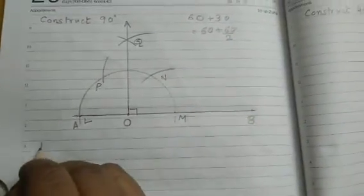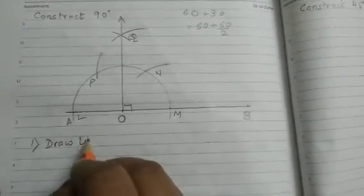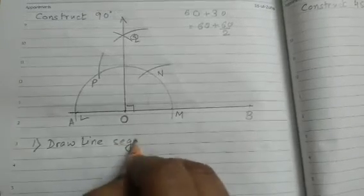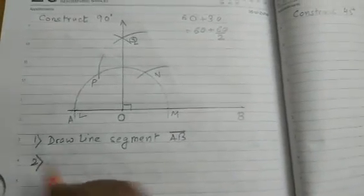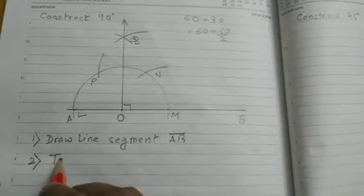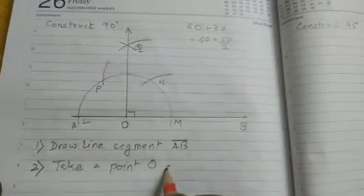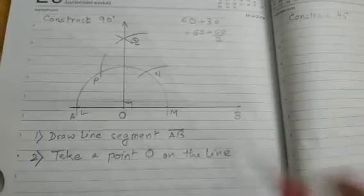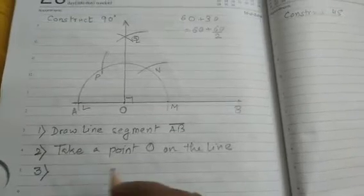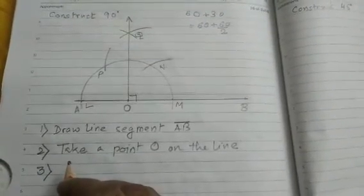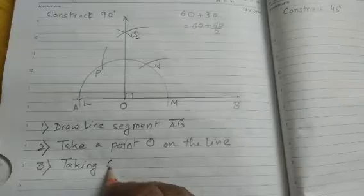First one, draw line segment AB. Two, because I have taken a point O, I am writing: take a point O on the line. You can draw perpendicular and all those also can be done. Three, what are you doing? Taking O as center and any radius.